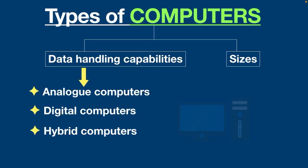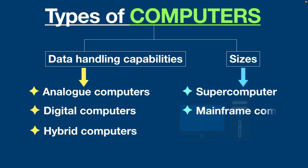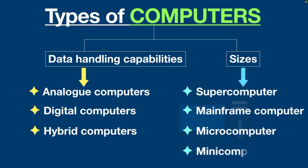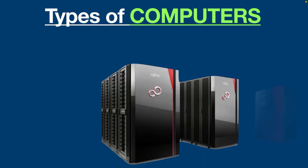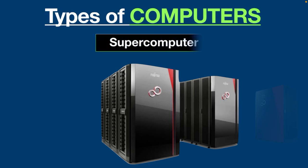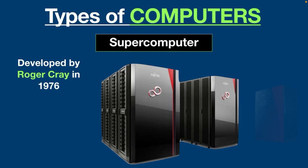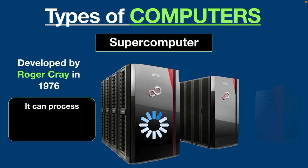On the basis of size, there are four main types of computers: supercomputer, mainframe computer, microcomputer, and minicomputer. When we talk about speed, the first name that comes to mind is the supercomputer. It's the biggest and fastest computer and obviously very expensive. It was first developed by Roger Cray in 1976.